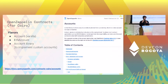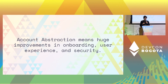In Starknet you can use OpenZeppelin Contracts for Cairo, which includes a regular account using the Starknet signature scheme, an Ethereum account using Ethereum signatures, and an account library you can use to build your own custom accounts. I hope by now you get the idea that this means a huge improvement in onboarding, user experience, and security.